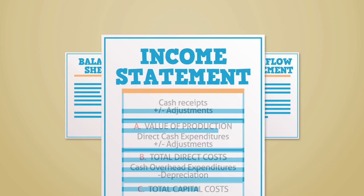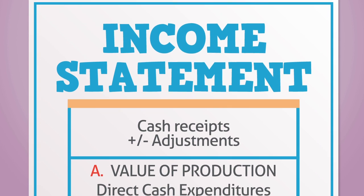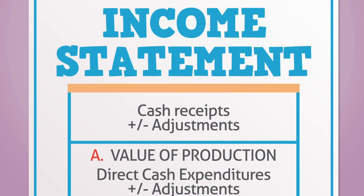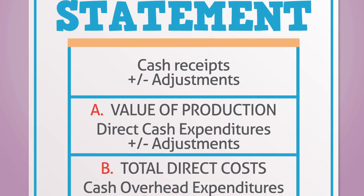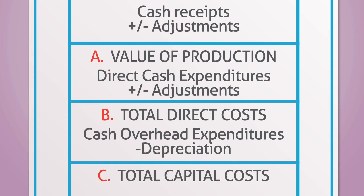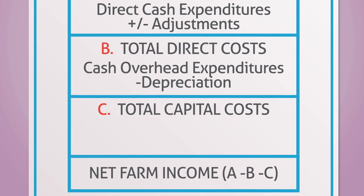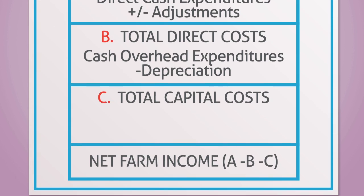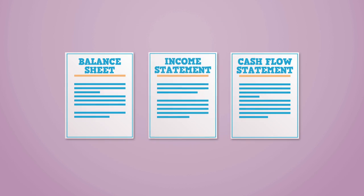The income statement reflects net earnings or profitability from the use of farm equity, labor, and management by giving a summary of how the business incurs its revenues and expenses through its operating activities over a period of time.